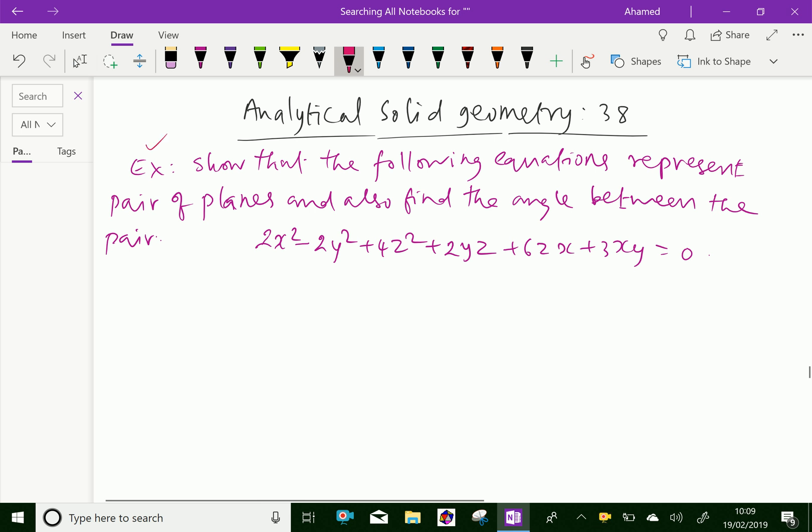Example: Show that the following equations represent pair of planes and also find the angle between the pair. The given plane is 2x² - 2y² + 4z² + 2yz + 6zx + 3xy = 0.